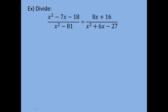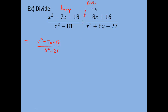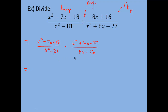Let's look at an example: divide x squared minus 7x minus 18 over x squared minus 81, divided by 8x plus 16 over x squared plus 6x minus 27. First, we keep the first fraction exactly as written. We change division to multiplication, and then we flip the last fraction, making it x squared plus 6x minus 27 over 8x plus 16. Now we have a multiplication problem, so we factor everything completely.